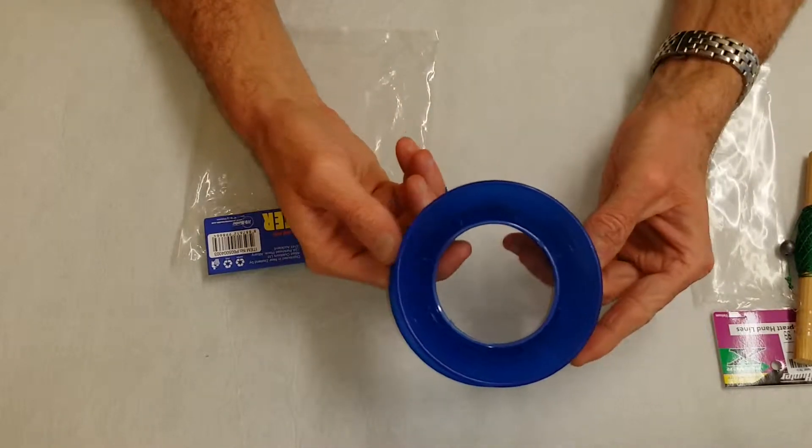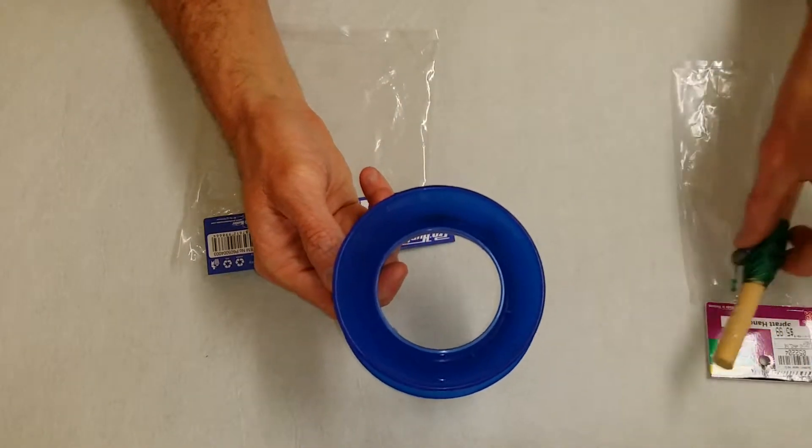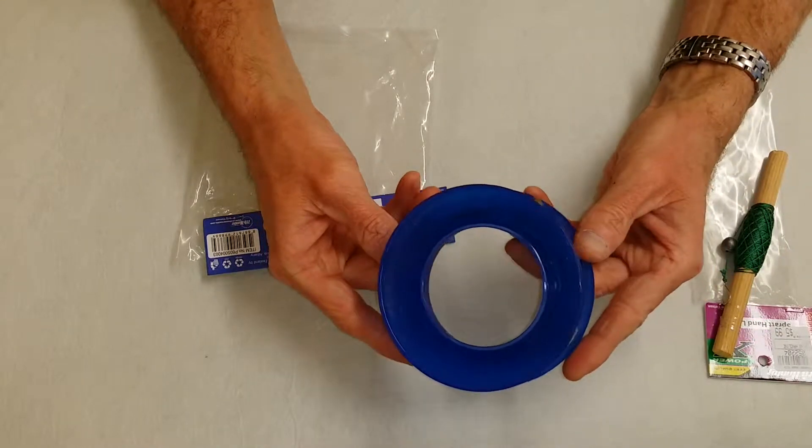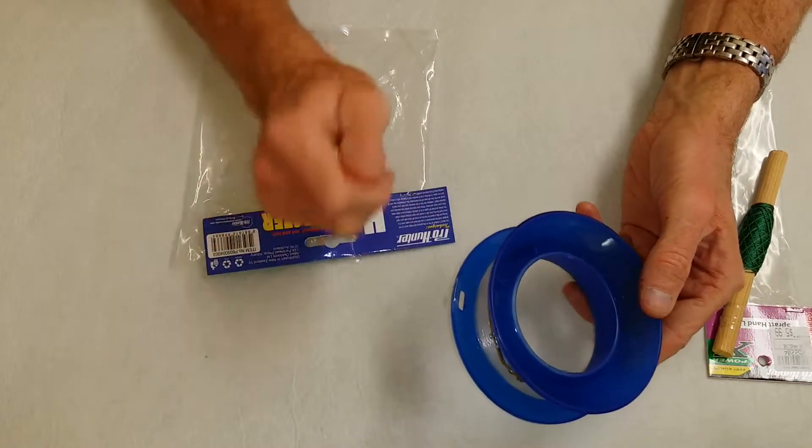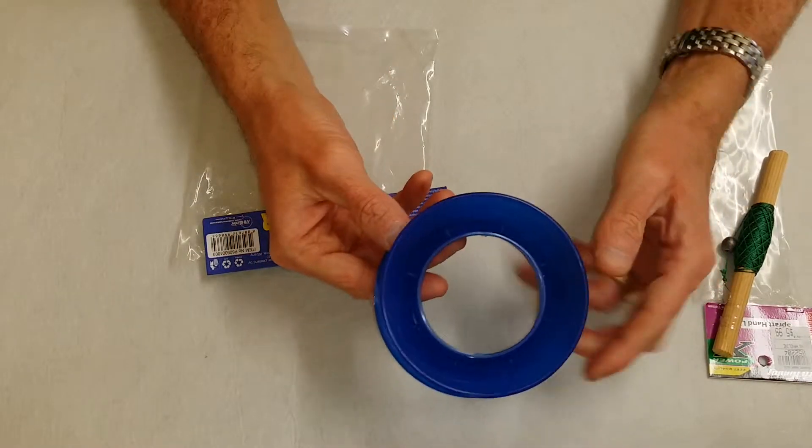The advantage with this setup over the little hand line here is that you can actually cast these a bit further. The way that they're shaped means that if you spin the sinker around in the air and then throw it, the line actually peels off the side of this lip.